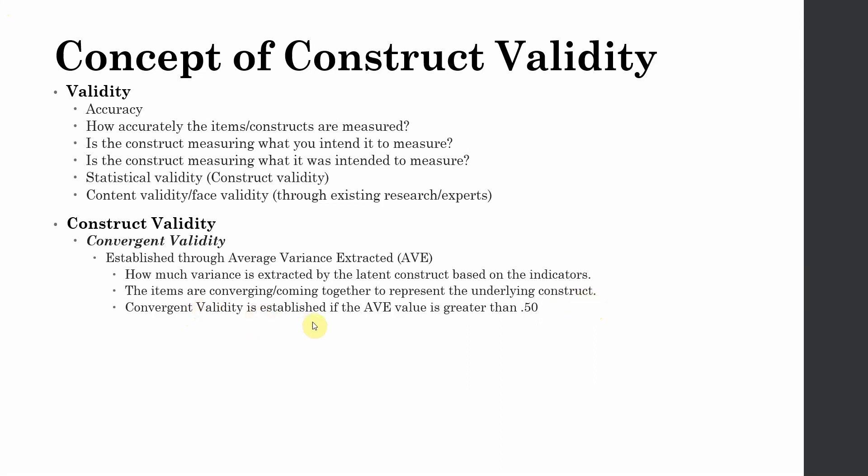Convergent validity is established if your AVE is greater than 0.50. The average variance extracted is greater than 0.50. Now where is this AVE? How to calculate this AVE? How to report this AVE? We are going to talk about this in greater detail in coming lectures.